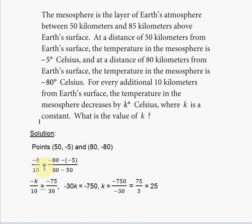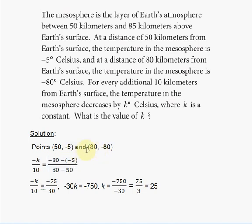We set the two slope expressions equal because the slope is constant. We can calculate the slope from our two known points and set it equal to minus k over 10, since they represent the same constant slope.